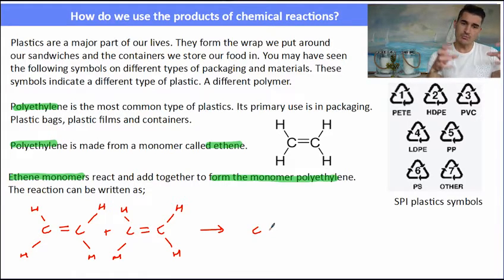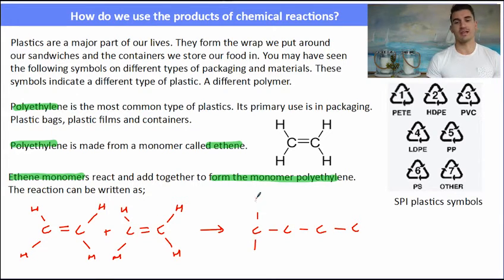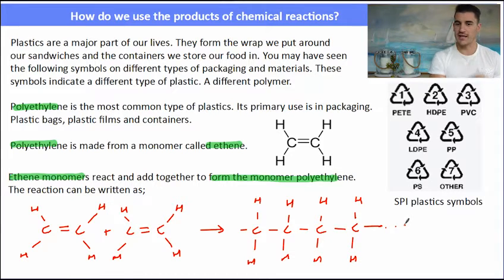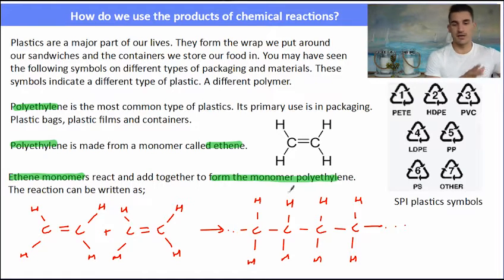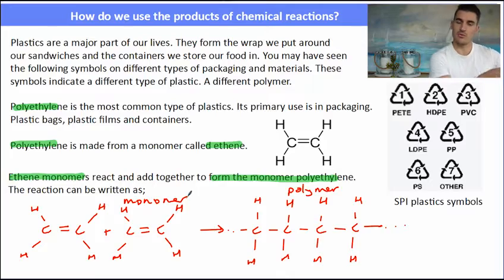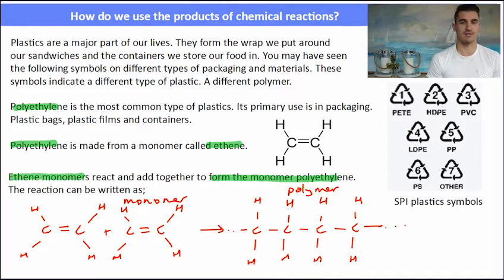What happens is the double bond in the ethene monomer will break. It will then allow us to join those two molecules together and we form a long chain of just carbons and hydrogens. To indicate that this chain continues, we would draw a line and dot dot dot saying it continues to the right, and a line dot dot dot to the left. So we form our polymer from our monomers. The polymer will only have single carbon-to-carbon bonds, whereas the monomer has double carbon-to-carbon bonds.